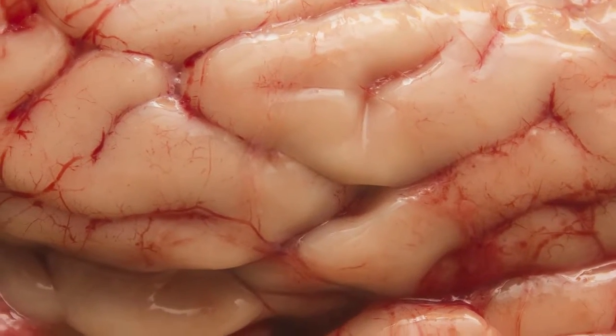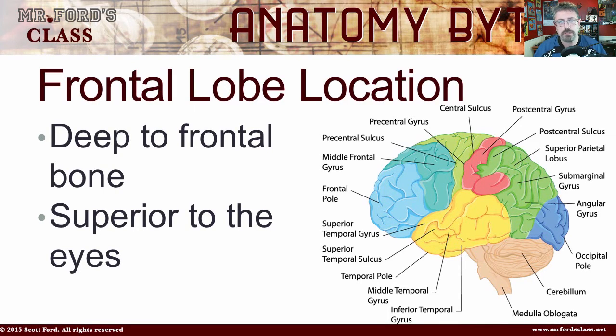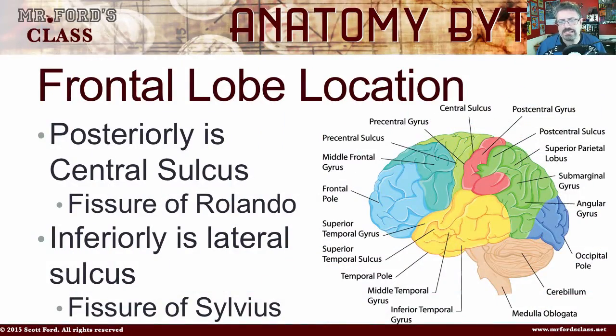Here's a quick bigger picture of the brain — you can see the different folds, grooves, and depressions. So where is the frontal lobe? If you take your hand and put it to your forehead — like you just realized something — this is where your frontal lobe is located. It is deep to the frontal bone, superior to your eyes, bounded posteriorly by the central sulcus (otherwise known as the fissure of Rolando), and inferiorly by the lateral sulcus (otherwise known as the fissure of Silvius).